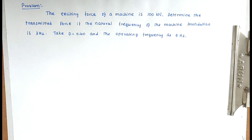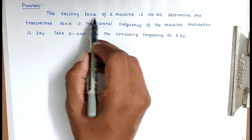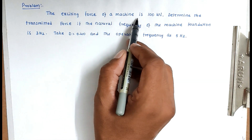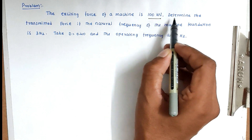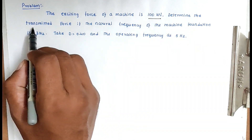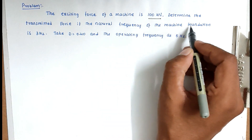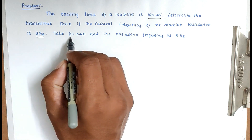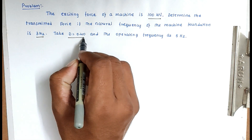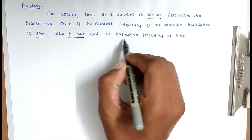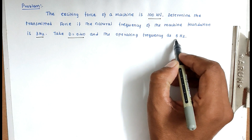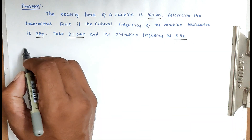Hello friends, welcome to Super Engineering Exam. Today we're going to see a problem related with machine foundation. The problem is: the exciting force of the machine is 100 kilonewton. Determine the transmitted force if the natural frequency of the machine foundation is 3 Hz, d equal to 0.40, and the operating frequency is 5 Hz.